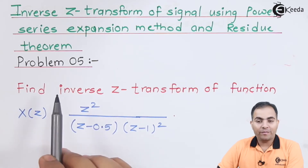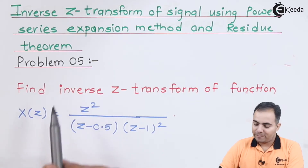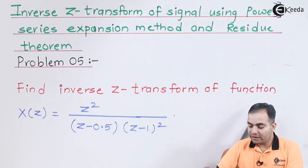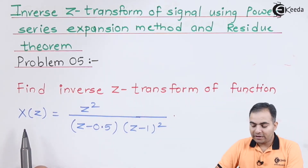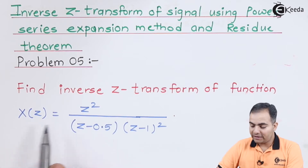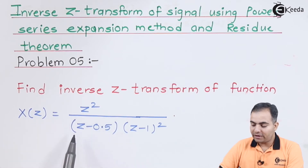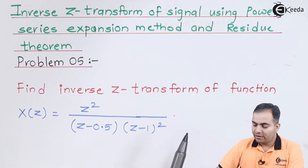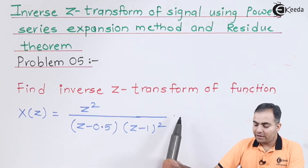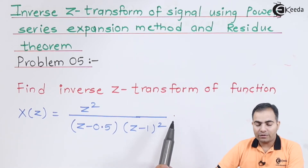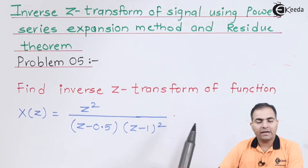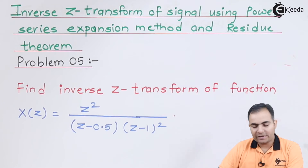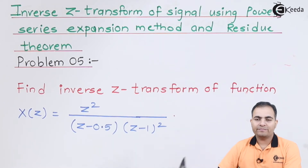Problem number 5: Find the inverse Z-transform where X of Z equals Z squared. In the denominator we have Z minus 0.5 and Z minus 1, the whole square. We will solve this using the residue theorem and then move on to the solution.